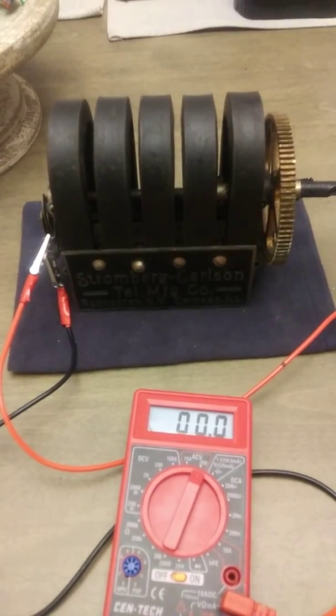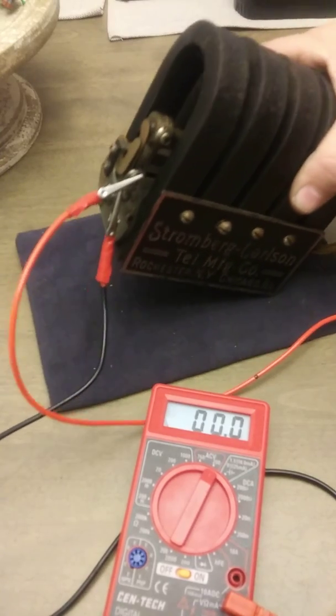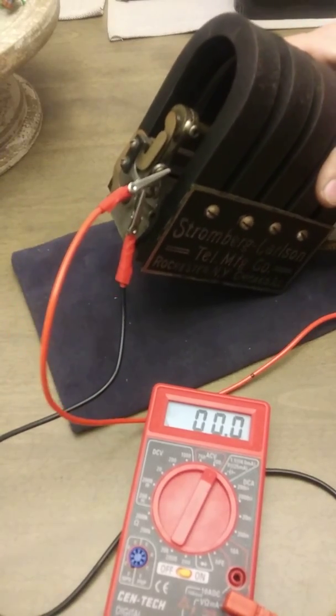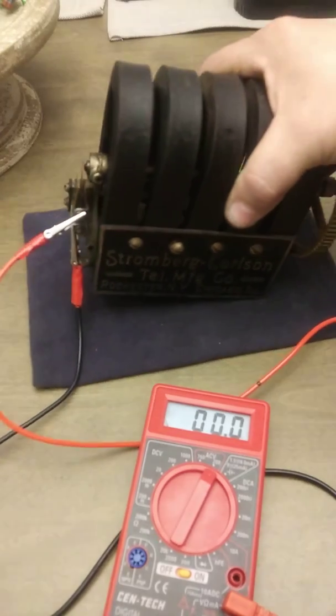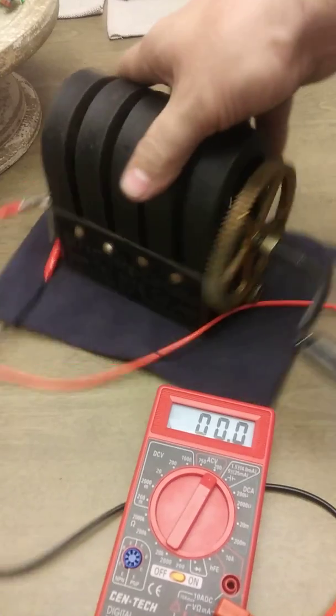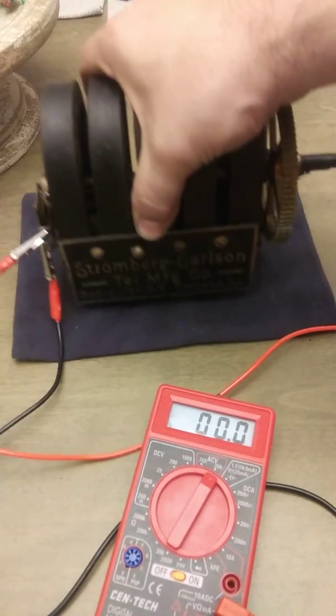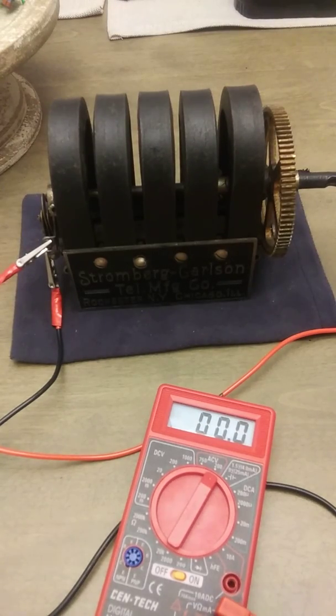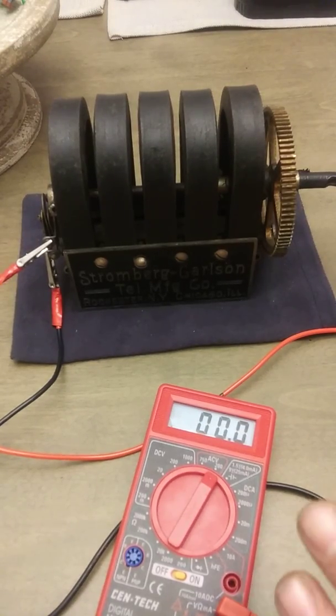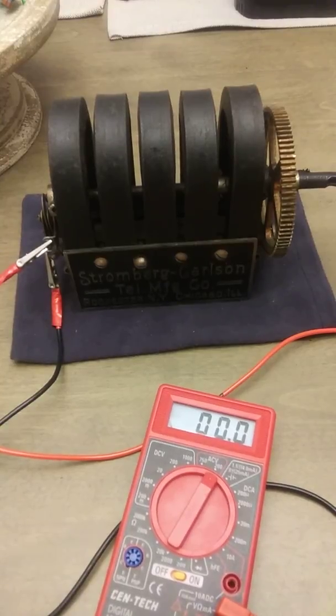The interesting thing about this is I'm guessing these horseshoe magnets are maybe Alnico. If somebody knows, give me a comment and educate me a little further. I know that advancements in magnets from Alnico and ceramic and neodymium have progressed significantly. I want to say that this particular magneto is probably close to 120 years old.